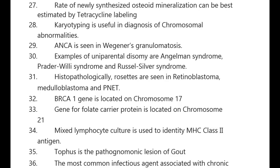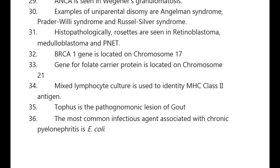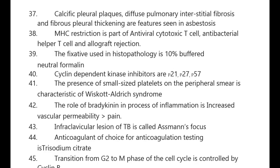Tophus is the pathogenic lesion of gout. The most common infectious agent associated with chronic pyelonephritis is E. coli. Calcific pleural plaques, diffuse pulmonary interstitial fibrosis, and fibrous pleural thickening are features of asbestosis.